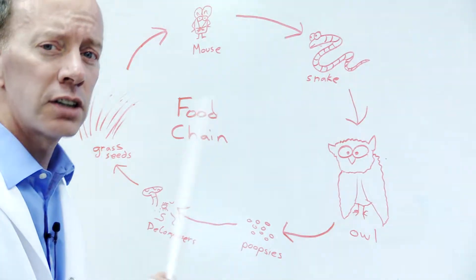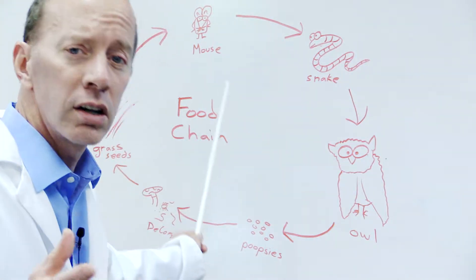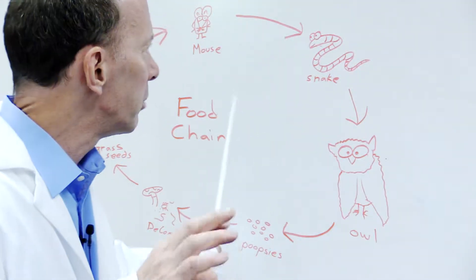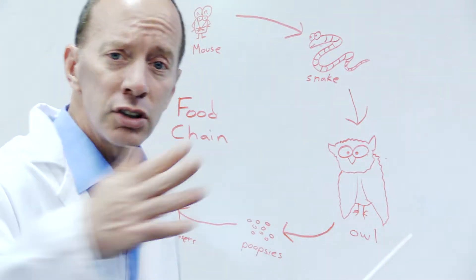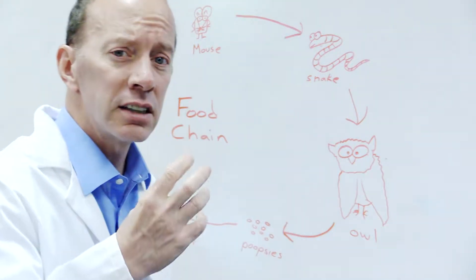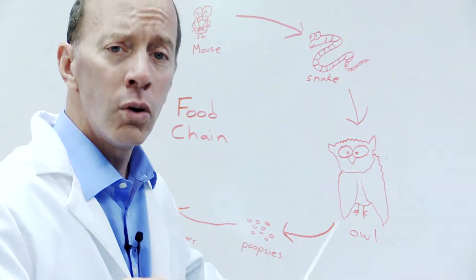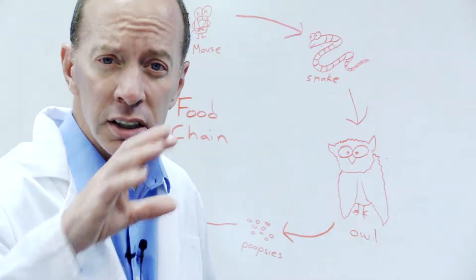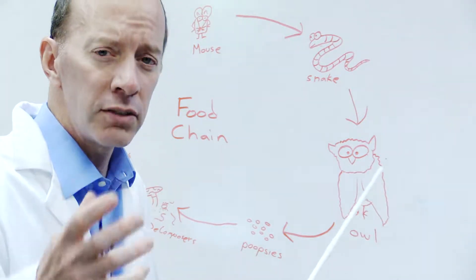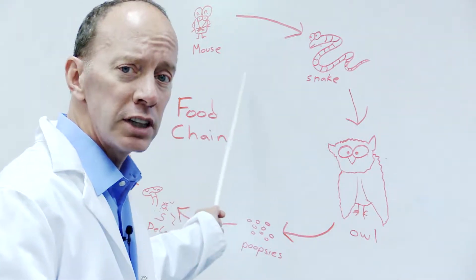The food chain starts right over here with the grass and seeds growing from the ground. Along comes a little mousy — the mousy will eat the seeds. Maybe later that day, Mr. Snake comes slithering over, sees the mousy, and whoosh — grabs the mousy, eats it. Maybe in the evening, the owl sees the snake, flies down, whoosh — grabs the snake and eats it.